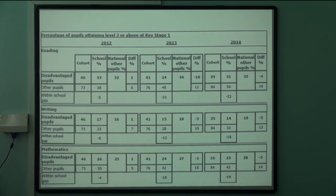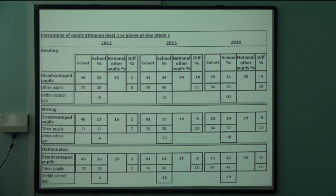But when you look at level 3 and above, this is where you might want to think about asking questions, because more able disadvantaged pupils don't do quite as well comparatively. The within-school gap is really significant: 23% for reading, 18% for writing and 19% for maths. An Ofsted inspection team coming to the infant school with this new information might just be asking questions around how well more able disadvantaged pupils are achieving across the curriculum.